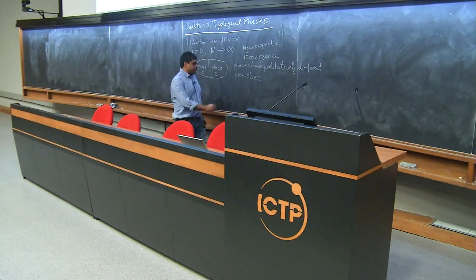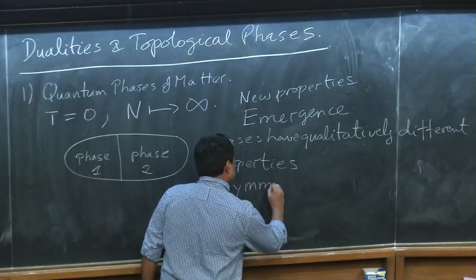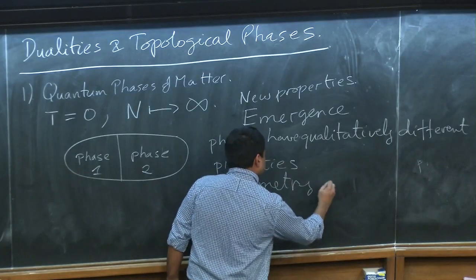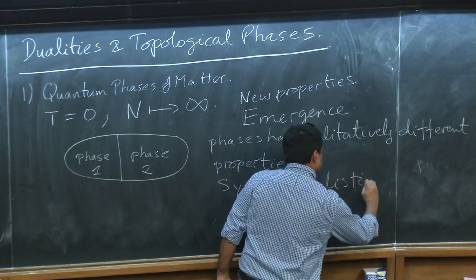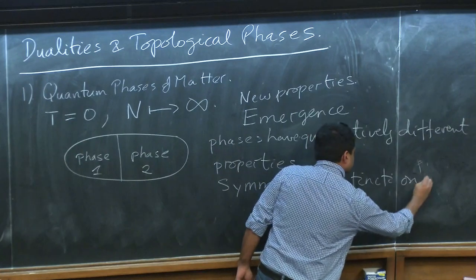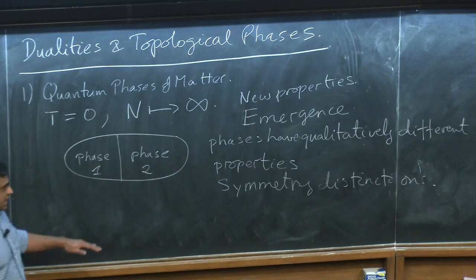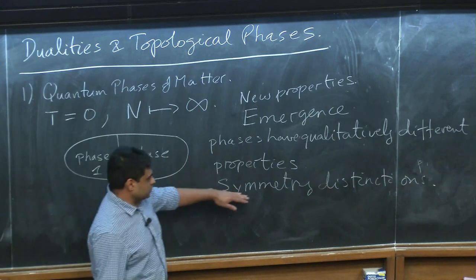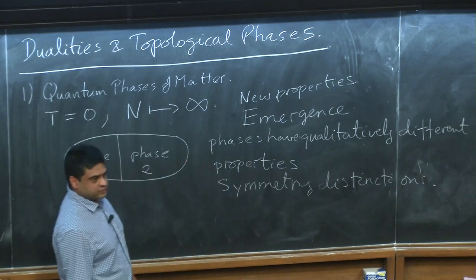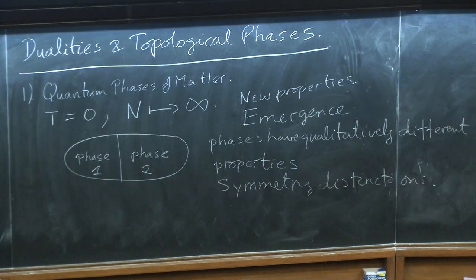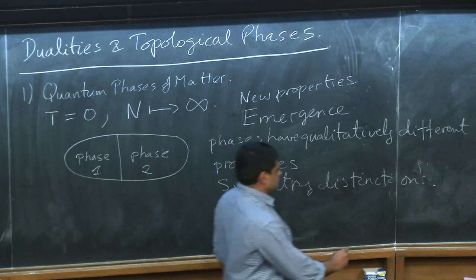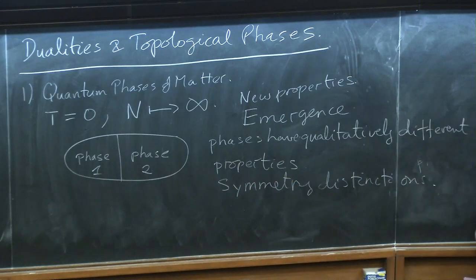People thought for a long time it was really symmetry — just a symmetry distinction — and there was a theory to account for that: Landau's theory, where you could sort of capture all the different ways in which symmetry could be broken. It was thought that is really all there is to distinguishing phases of matter. But more recently we have realized that there are other ways in which phases can be different.